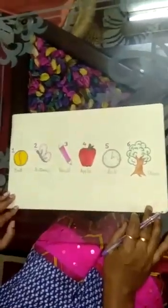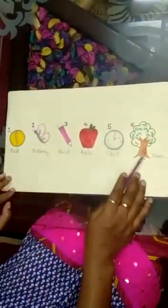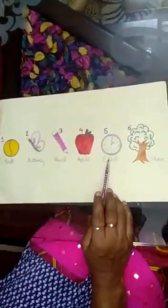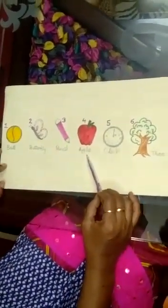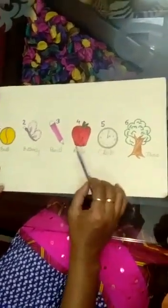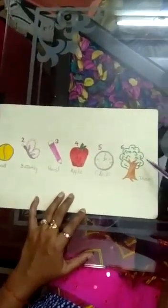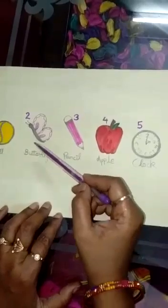I will explain ordinal numbers with an example. Here I have drawn different objects: Ball, Butterfly, Pencil, Apple, Clock and Tree. Now I will ask you some questions. Apple is in which position? Apple is in the 4th position. What is the position of the pencil? Pencil is in the 3rd position. What is the position of the tree? Tree is in the 6th position. What is the position of the ball? Ball is in the 1st position. What is the position of the butterfly? Butterfly is in the 2nd position.